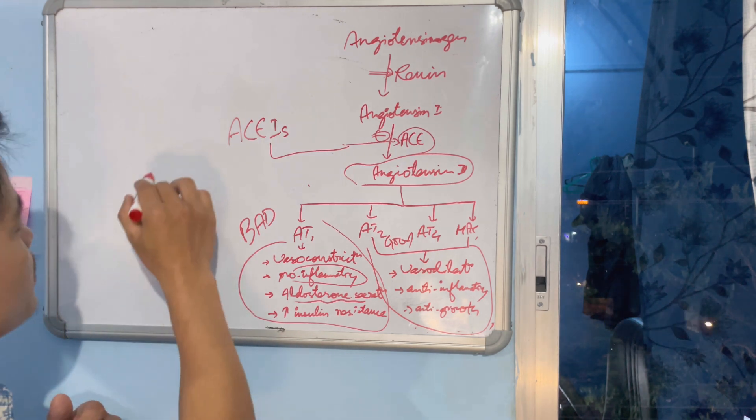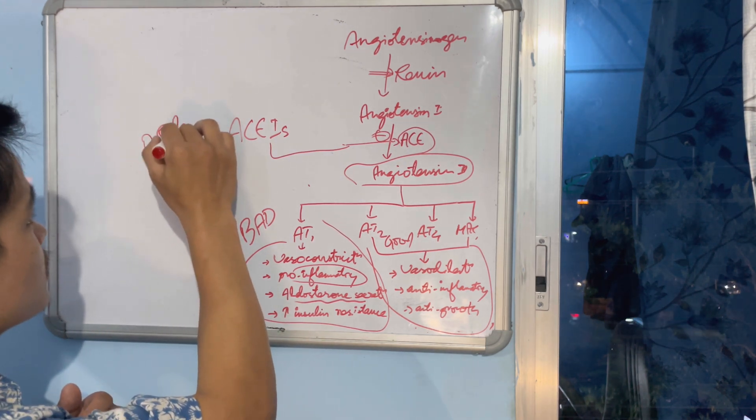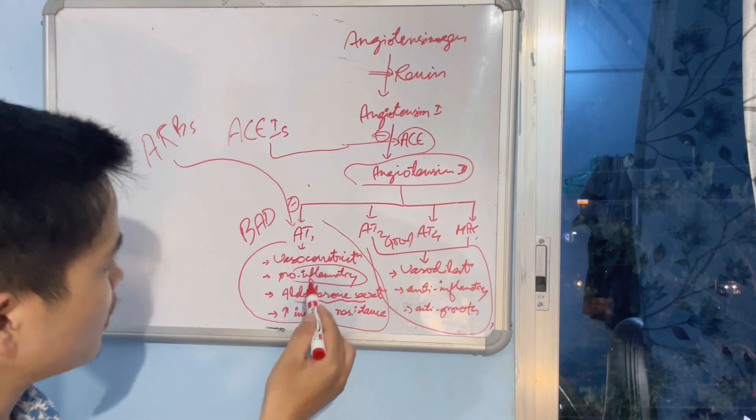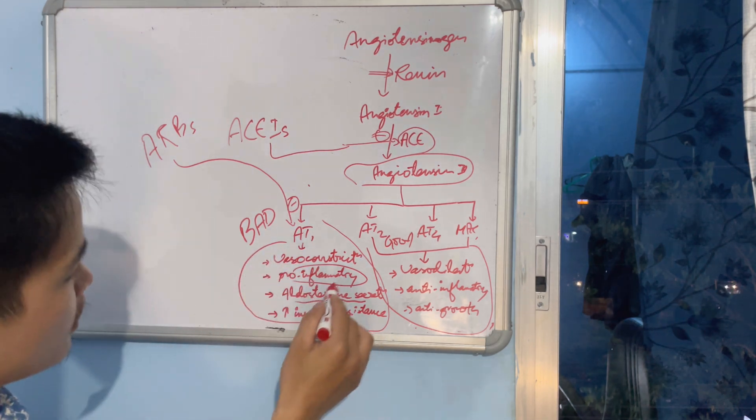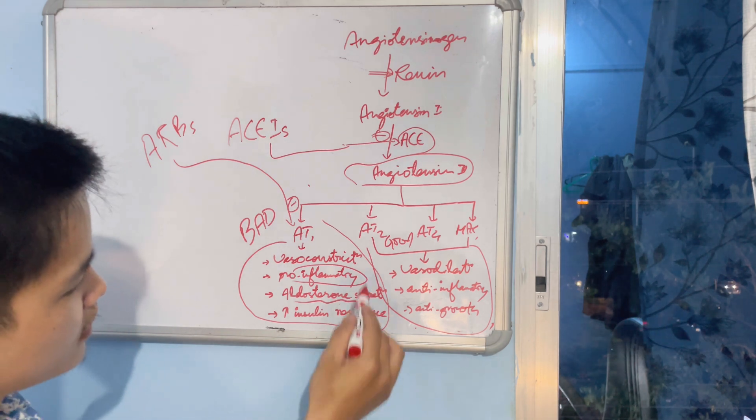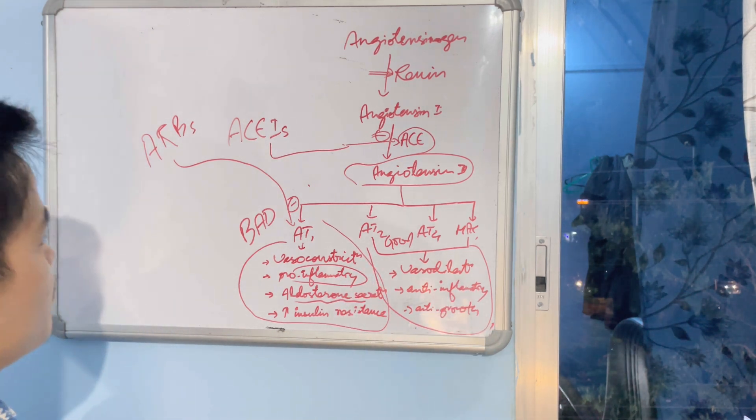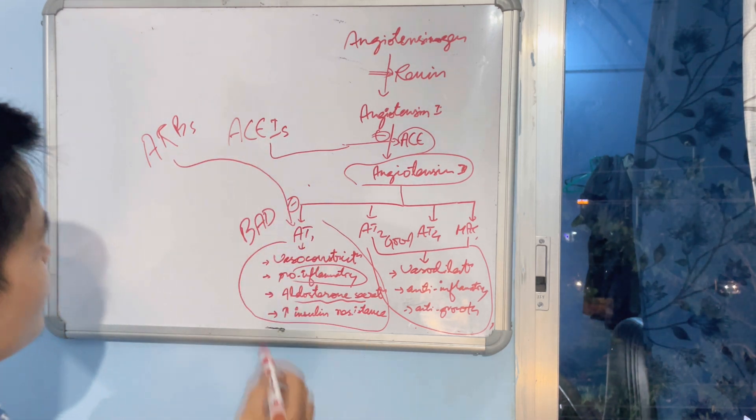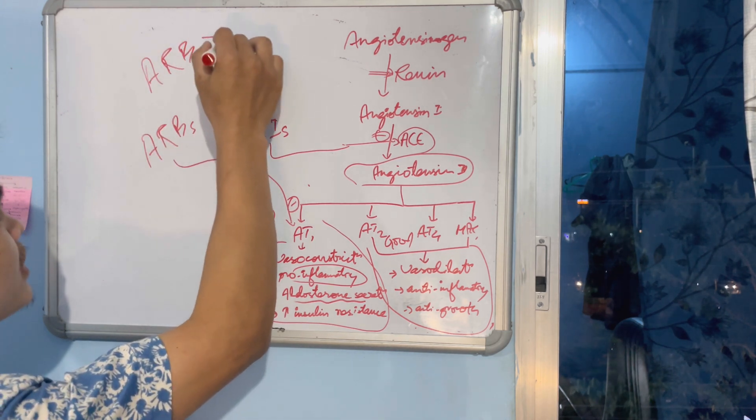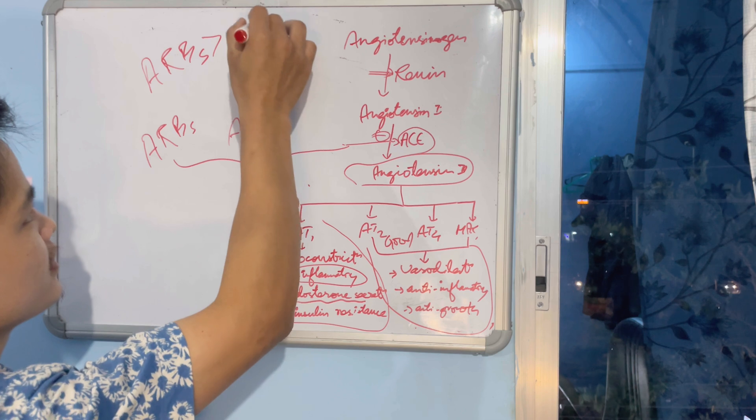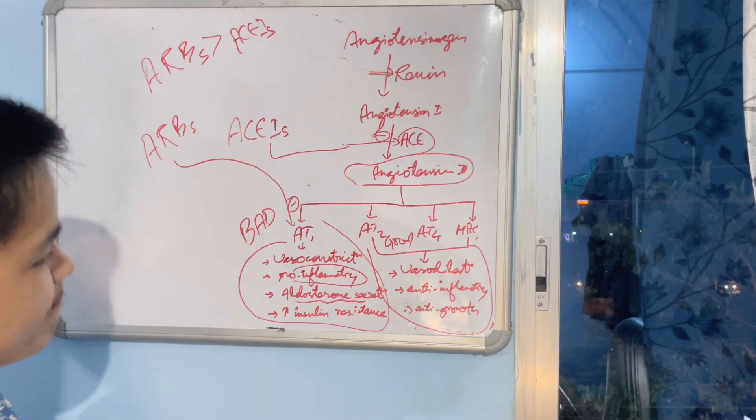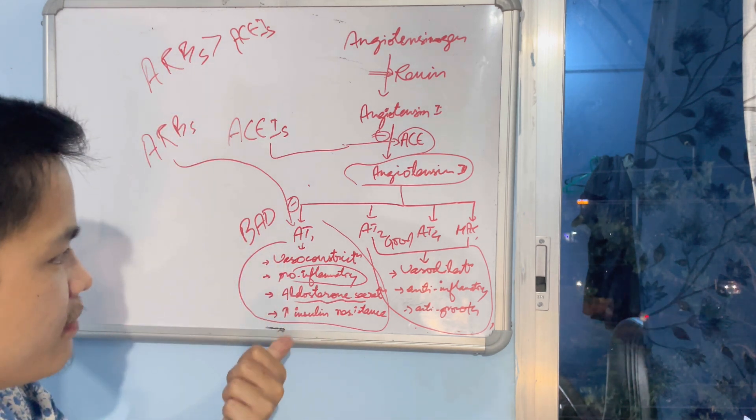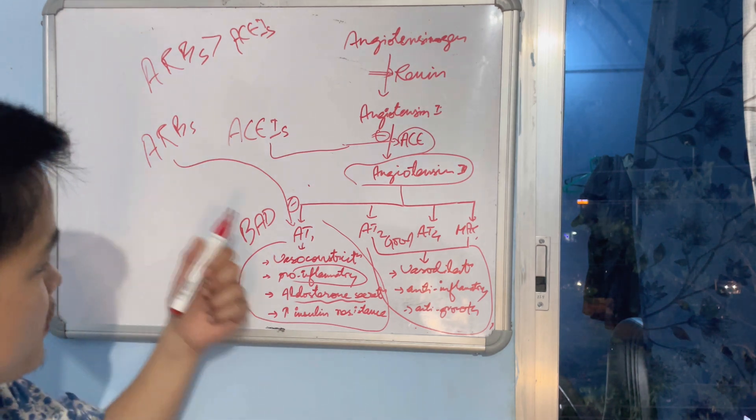However, when you give ARBs, it will only inhibit AT1. When it inhibits AT1, this bad guy will be dead, but this good guy will remain alive. So which one is the better one - whether it is ARBs or ACE inhibitors? As you can see, ARBs is better than ACE inhibitors when you use as monotherapy, because ARBs is killing the bad guy but not the good guy. I hope you understood what I am trying to tell you.